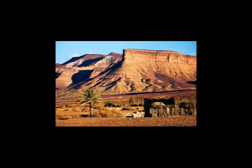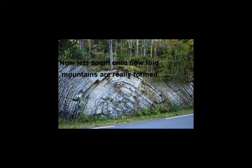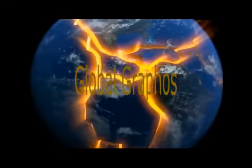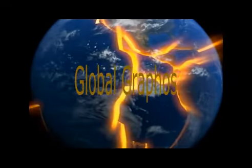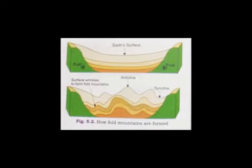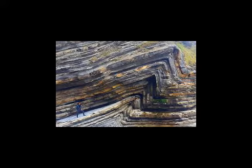Now let's zoom into how fold mountains are actually formed. Basically, there must be the existence of a geosyncline. Geosynclines are long broad depressions or valleys in the earth's crust with a very thick layer of accumulated sediments which have cemented over time.